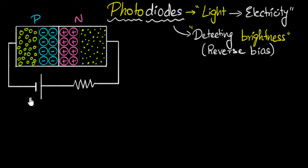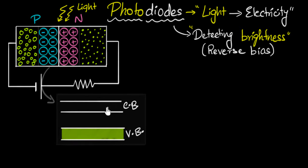Now let's think about what happens when we shine light. We need to go back to band theory of solids. Semiconductors have two topmost bands: the conduction band and the valency band. In the depletion region, there are no charge carriers — the conduction band is empty and the valency band is completely filled, so there can be no conduction.